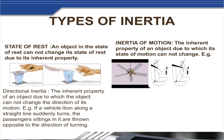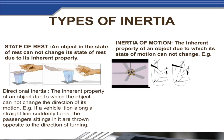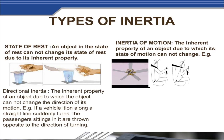Inertia of rest: an object in the state of rest cannot change its state of rest due to its inertia property. For example, a glass of water has a cardboard placed on it with a coin on top. If we push the cardboard, the coin falls straight into the glass — the reason is the state of rest (inertia of rest).